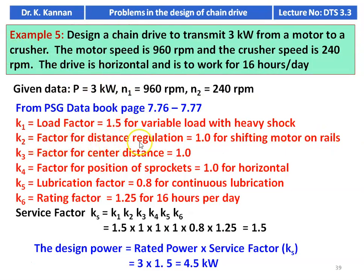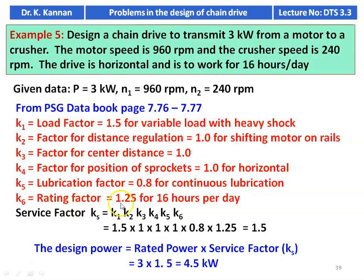K2, factor for center distance regulation = 1 for shifting motor on rail — we can adjust the center distance by shifting the motor. K3, factor for center distance, is 1 — center distance is not given, we assume 1. K4, factor for position of sprocket = 1 for horizontal drive. K5, lubrication factor = 0.8 for continuous lubrication. K6, rating factor = 1.25 for 16 hours per day. Service factor Ks = K1 × K2 × K3 × K4 × K5 × K6 = 1.5 × 0.8 × 1.25 = 1.5. Design power = rated power × service factor = 3 × 1.5 = 4.5 kilowatt.